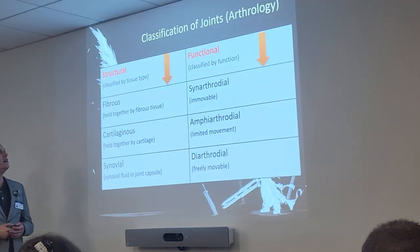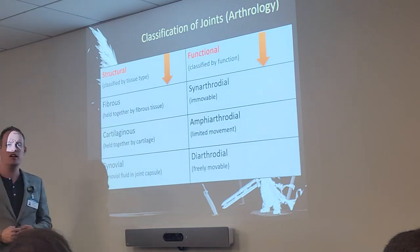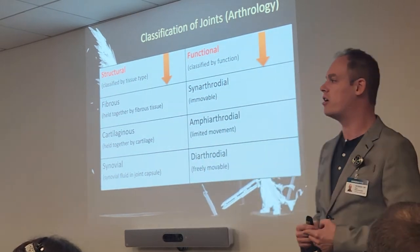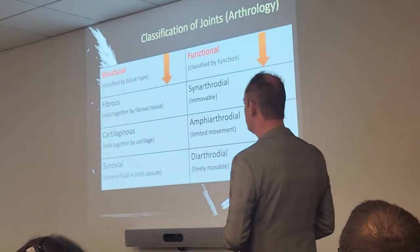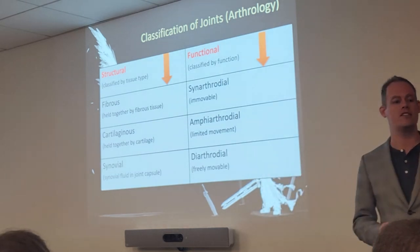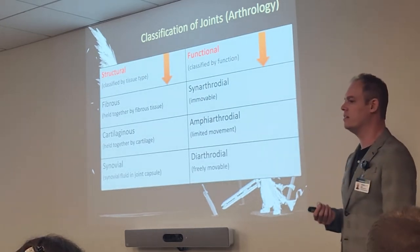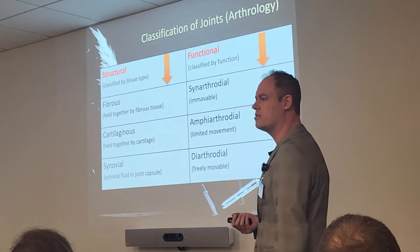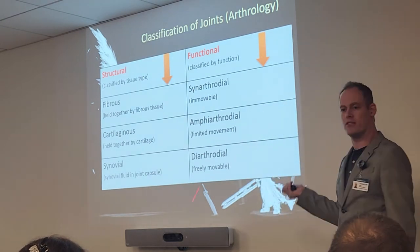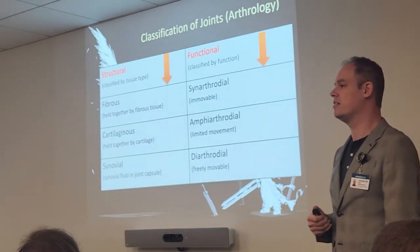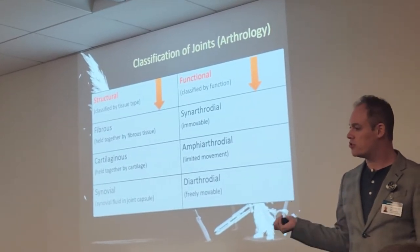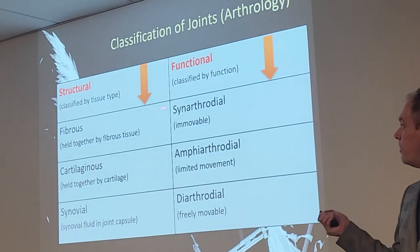Now, joints — this should look familiar from last semester. We classify joints by structure and by function. The three main structures are fibrous, cartilaginous, and synovial. Fibrous means held together by fibrous tissue; cartilaginous is held together by cartilage; and synovial has that synovial capsule containing synovial fluid. For function, you have synarthrodial (immovable), amphiarthrodial (limited movement), and diarthrodial (fully movable). Do not forget these six terms — as we go through each chapter, we're going to classify all joints by structure and function.